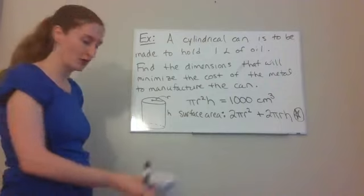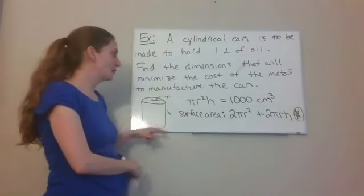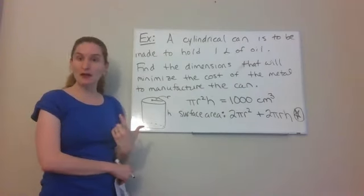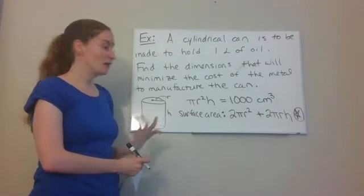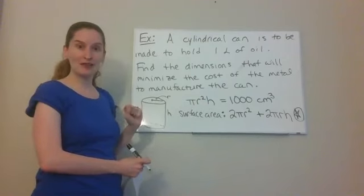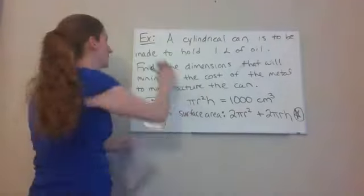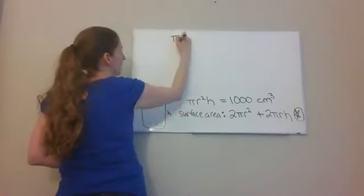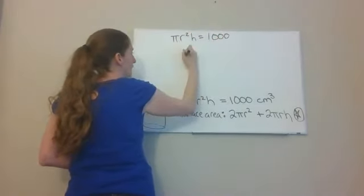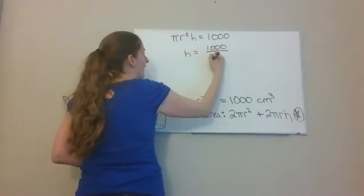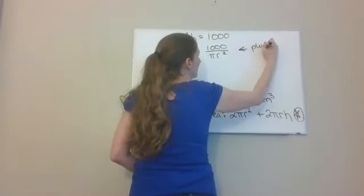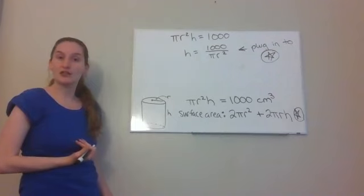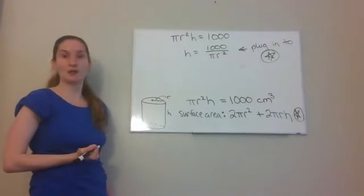The problem is I have too many variables — both r and h. I need to reduce to one variable. I'll use the volume equation: π r² h equals 1,000. Solving for h by dividing by π r² gives h equals 1,000 over π r². I can plug that into the surface area equation to get an equation involving only r, then find the minimum by taking the derivative.